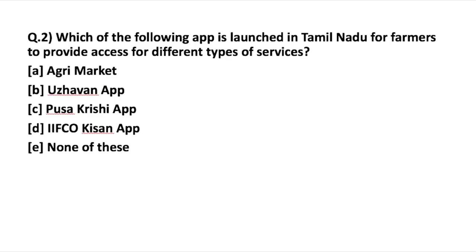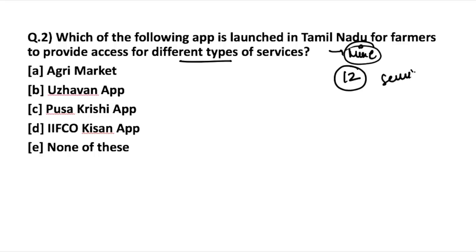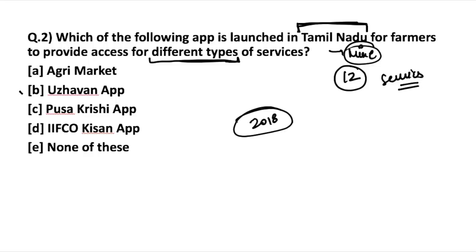Moving on to the next question: which app was launched in Tamil Nadu to provide farmers access to different types of services? Many sources mention varying numbers of services, so the key identifier is the state — Tamil Nadu. In 2018, the Tamil Nadu government launched the Ujjavan app, providing services such as farm subsidies, crop insurance, weather forecast for the next four days, and seasonal fertilizer stock information.